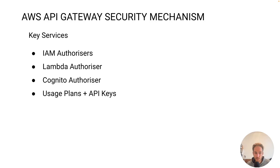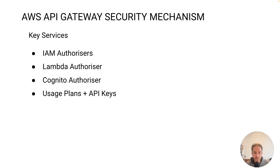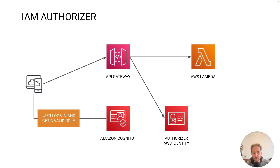This is what I'm going to cover today. The main services I'm going to explain are the IAM authorizers, Lambda authorizers, Cognito authorizers, and also a bonus point with usage plans and API keys. For Lambda authorizer and Cognito authorizer I already created a dedicated video — I'll put the links in the description and on the top right of this video. Now let's get started with the first one: the IAM authorizer.